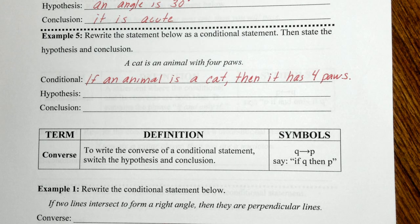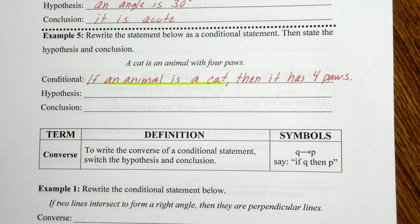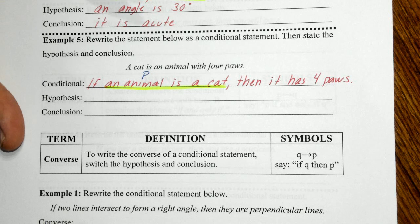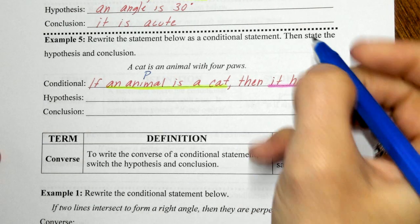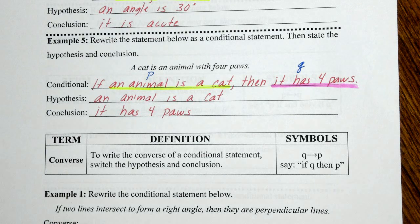Using our two color highlighters, we identify the hypothesis and conclusion. Remember: do not include 'if' for the hypothesis — it's simply 'an animal is a cat.' The conclusion does not include 'then' — it's simply 'it has four paws.' Hypothesis and conclusion are not full sentences; we're just pulling chunks from the sentence. No 'if,' no 'then,' no punctuation.